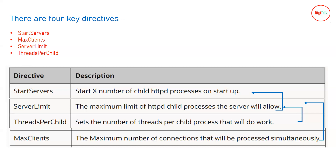ServerLimit is the maximum number of httpd child processes the server will allow — it sets the upper ceiling on StartServers. For example, if StartServers is set to two, two httpd child processes will be created when the server starts. If ServerLimit is defined as six, then under high load the server can spawn up to six child processes. ThreadsPerChild defines how many threads are created for each child process — so with StartServers=2 and ThreadsPerChild=20, a total of 40 threads are generated.